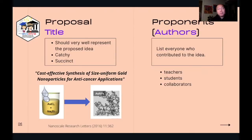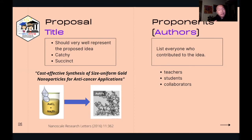The first part of a research proposal is the proposal title. You should be able to compose a proposal title effectively because this is the very first component that the research funding agencies or reviewers will read. If the quality of your title is low, they might just lose interest to read further or they might become negatively biased towards the idea. So what are the qualities of an effective proposal title? It should very well represent the proposed idea, it should be catchy, and it should be concise.